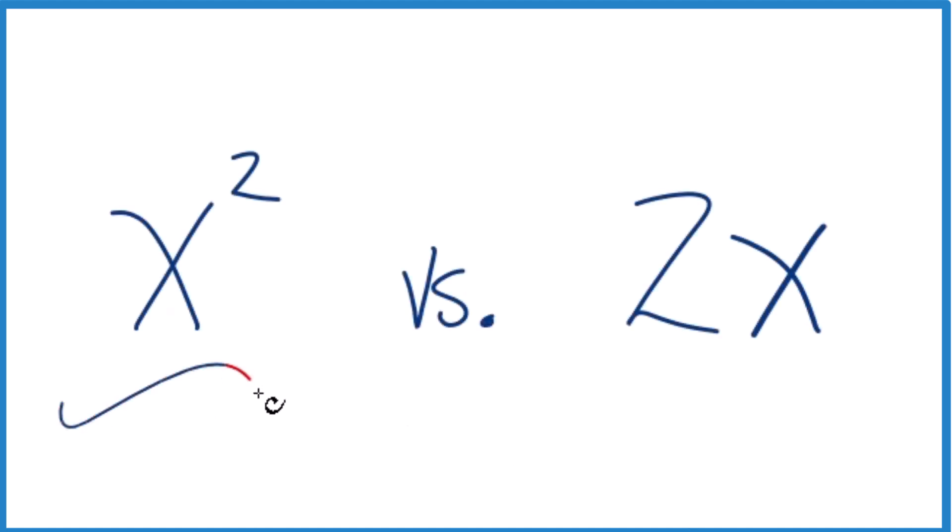The question is whether x squared is the same as 2x. So is x squared the same or different from 2x? Let's figure out how to do that.